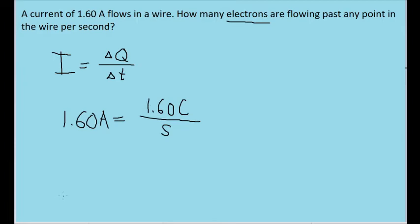Recall that according to the elementary charge, the charge on a single electron is equal to about 1.60 times 10 to the negative 19 coulombs.